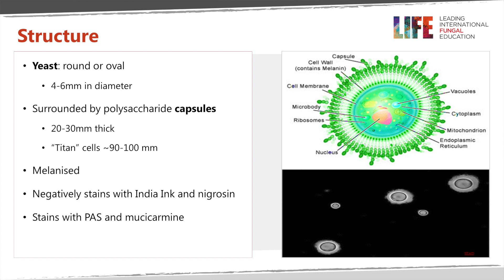Let's have a look at the organism itself. It's a round or nearly round oval structure and similar to other yeasts it's between four and six micrometers in diameter. As I've said previously it's surrounded by a polysaccharide capsule, which is a very important virulence determinant of this organism, and also is extremely useful in diagnosis. The capsule can vary in thickness, typically 20 to 30 micrometers, though this varies between the organism growing in culture and what we see in tissue. Over the last few years people have recognised much larger cells called titan cells. We don't really know what the biological function of these is but they have been well described and characterised.